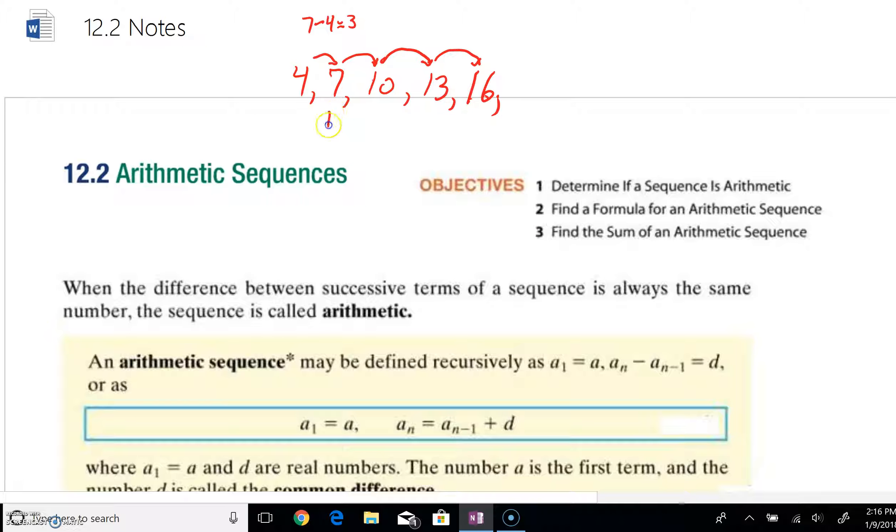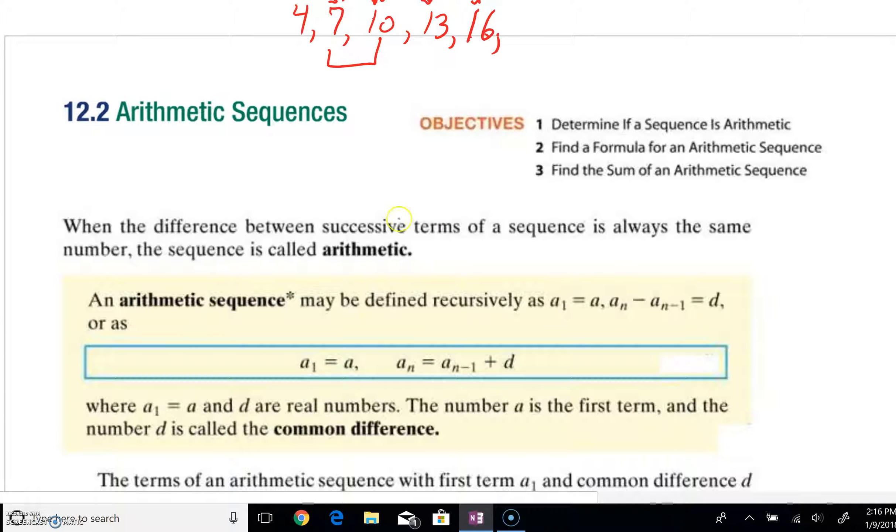As I'd subtract these two successive terms, 10 minus 7, we would get a 3. The same would be true for any two successive terms. You'd always get the same subtraction as you take the higher-ordered term minus the smaller-ordered term. So when the difference of successive terms is always the same number, the sequence is called arithmetic. That difference that you'd find would be called the common difference.